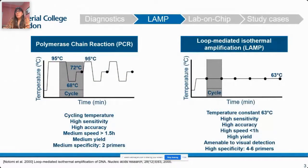The nucleic acid amplification method we employ is called LAMP — loop-mediated isothermal amplification — which, in contrast to PCR, is performed at a constant temperature of around 60 to 65 degrees. Results can be obtained in less than 30 minutes and it is highly specific and sensitive. LAMP is commonly done with 4 to 6 primers, and amplification occurs thanks to the strand displacement ability of the BST polymerase.